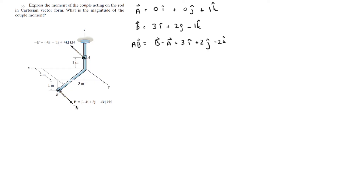We are given the Cartesian vector form of the force F at B, which is -4i + 3j - 4k.